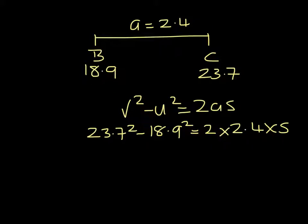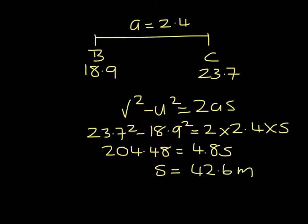So 23.7 squared minus 18.9 squared is 204.48. And that has to equal 4.8 S. So if I divide that by 4.8, I get that B, C is 42.6 metres.